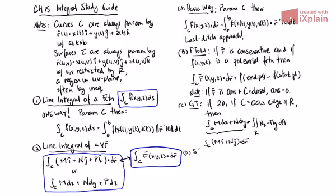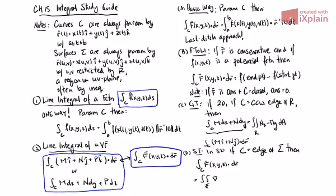And lastly, there's Stokes' Theorem — the 3D version of Green's Theorem. If we're in 3D and C is the edge of Sigma, then the integral over C of F·dR equals the integral over Sigma of the curl of F dotted with dS, where C is the edge of Sigma and Sigma has the induced orientation. So those are everything for line integrals on this page.